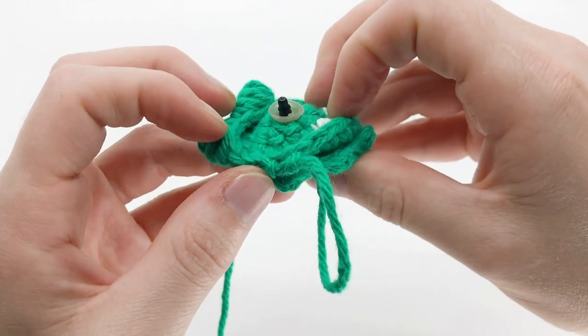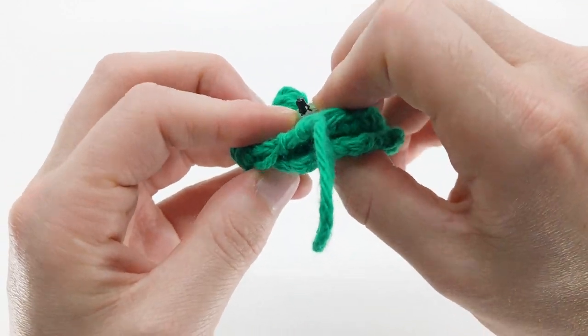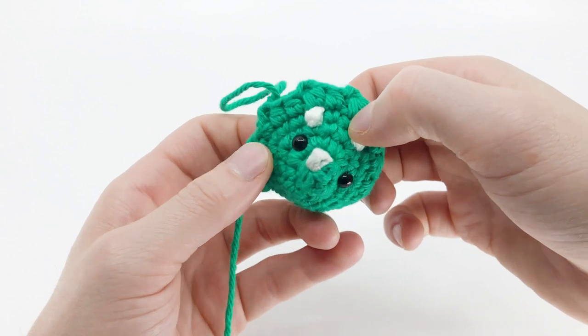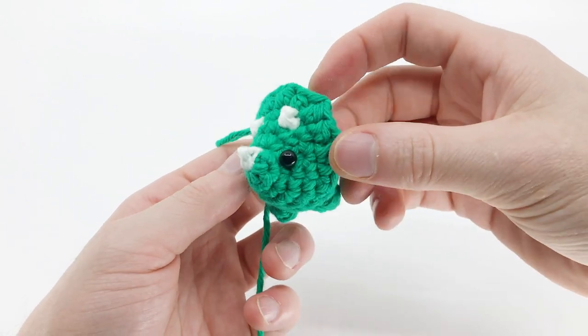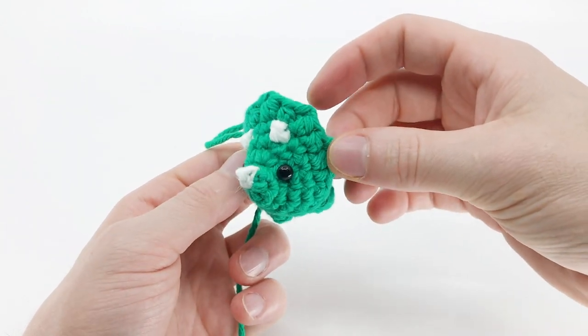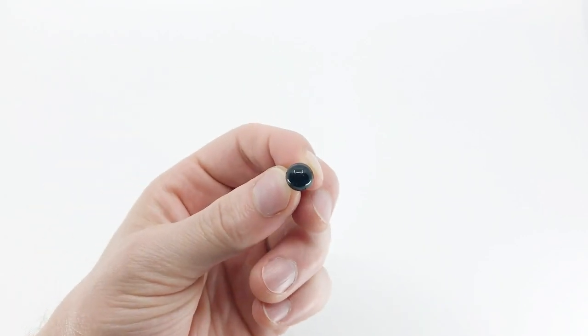Safety eyes are plastic attachable eyes that snap together to connect to any surface with a small hole or that you can poke through, obviously making them perfect for amigurumi.